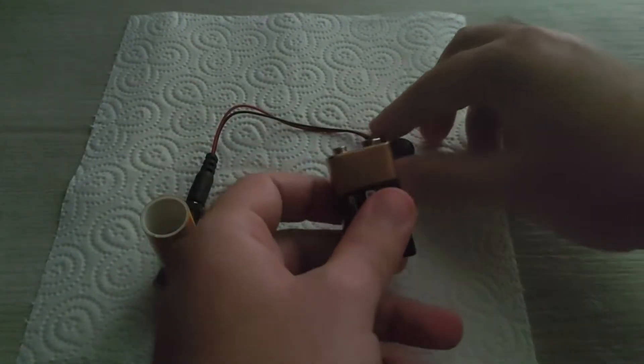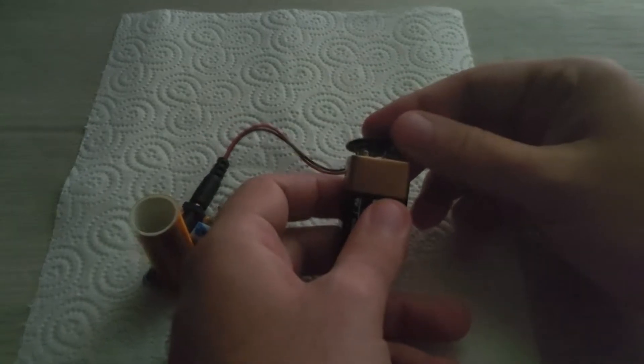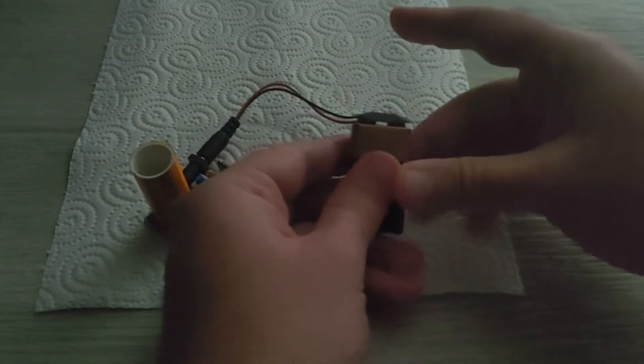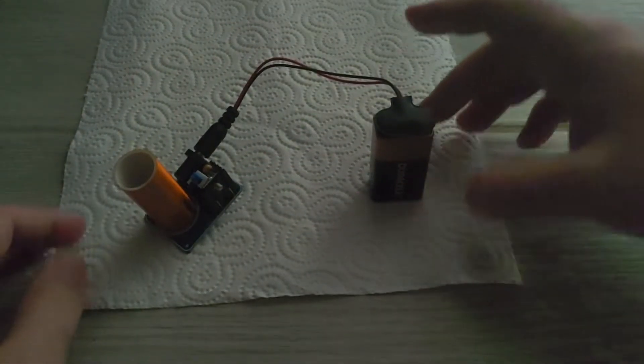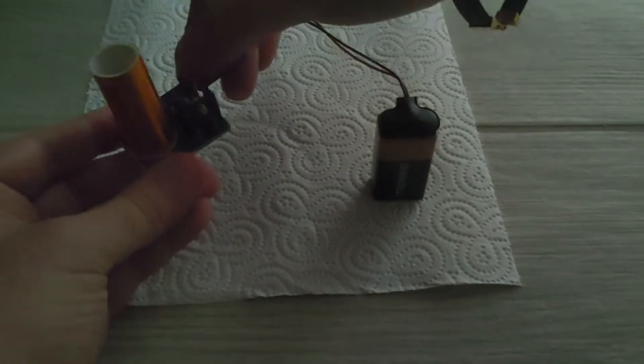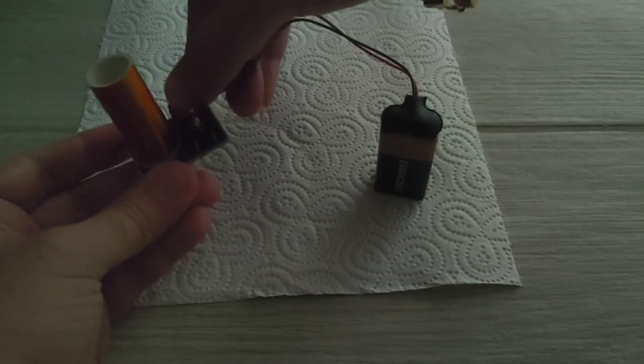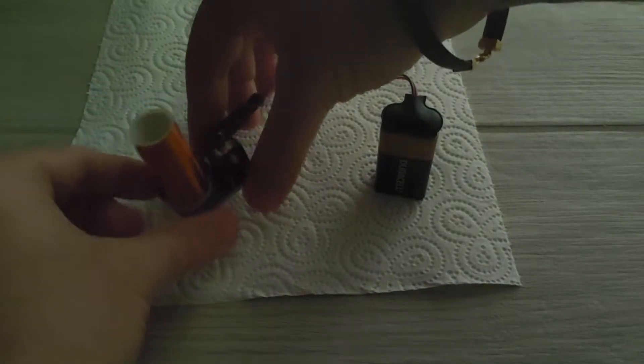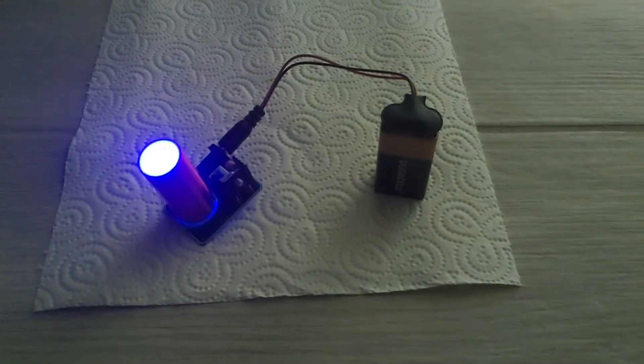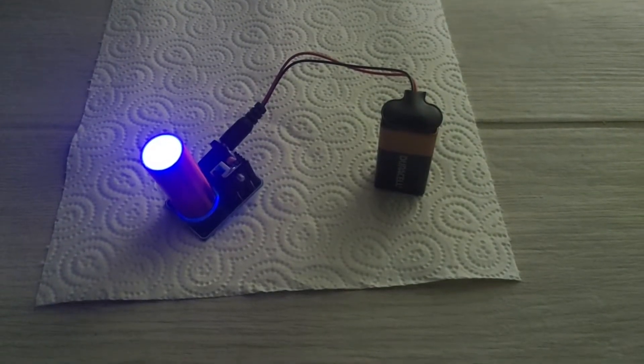First we have to connect the battery to the Tesla coil, and the Tesla coil will light off.